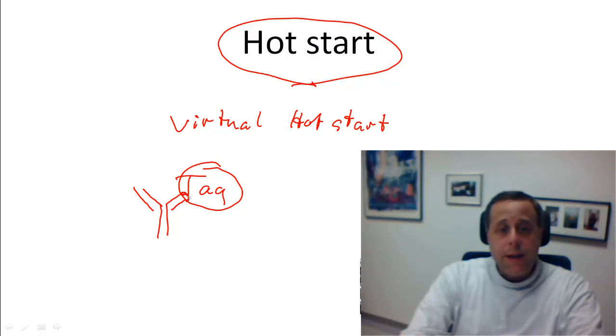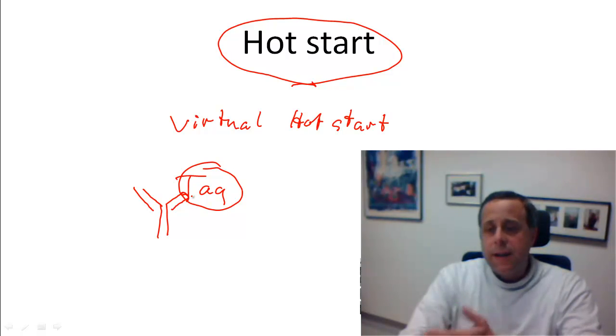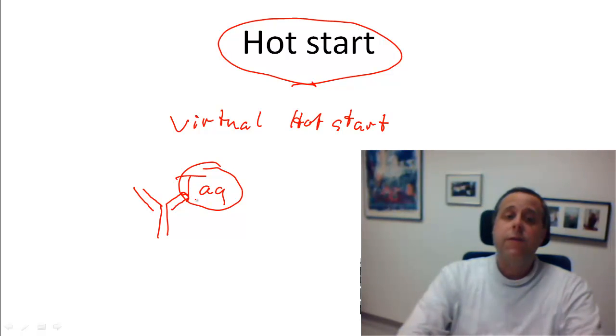However, if you heat this up to 95 degrees during the first PCR cycle, what you get is a denaturation of the antibody, and under such circumstances Taq will now be free to do its job.